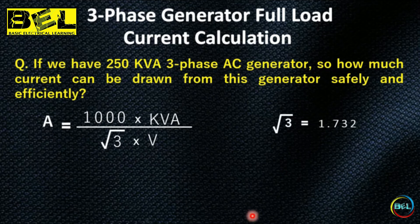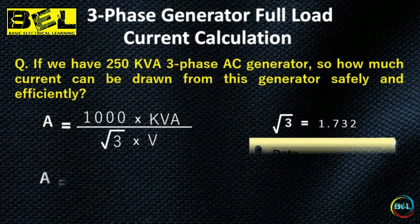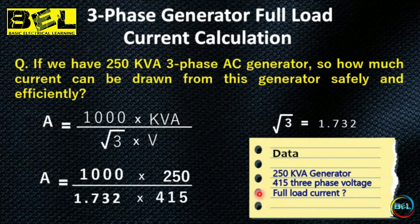The value of √3 is 1.732. We will place that value into our formula. From our given data: kVA = 250 and voltage = 415V (three-phase AC). We will now substitute these values into the formula.